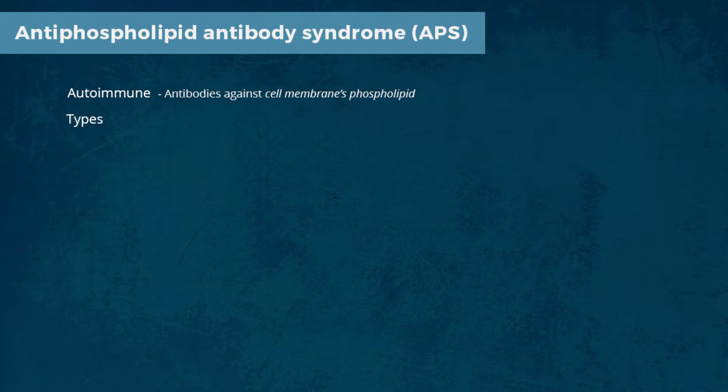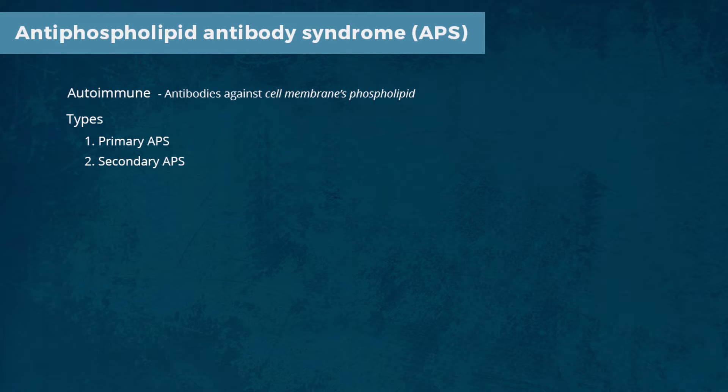Antiphospholipid syndrome can occur either as a primary disease or can be secondary to another autoimmune disease, most commonly SLE.